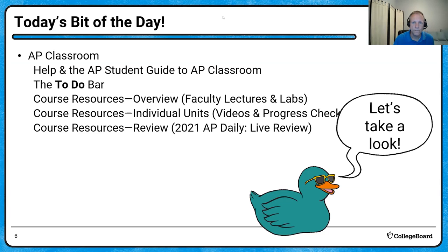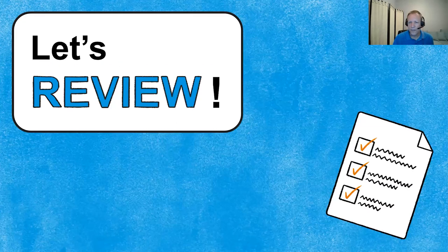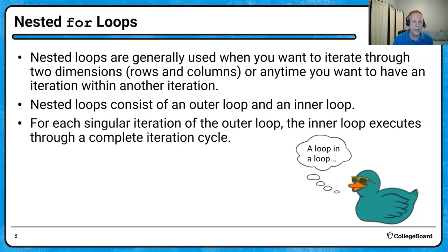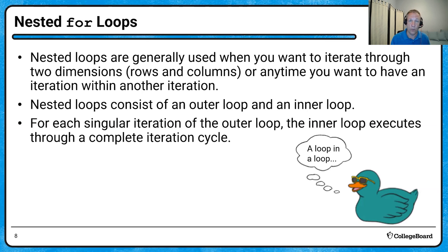Thanks for that, Rob. Now it's time for our review. Today we're going to talk about nested for loops, which can get a little complicated. Nested for loops are used when you want to iterate through two dimensions, something like rows and columns, or any time you want to have an iteration within another iteration — a loop inside a loop. You can have as many nested loops as you want, but we generally think of nested loops as an outer loop with an inner loop.